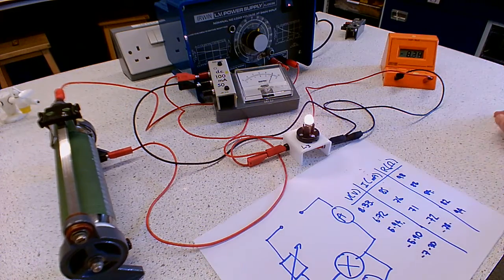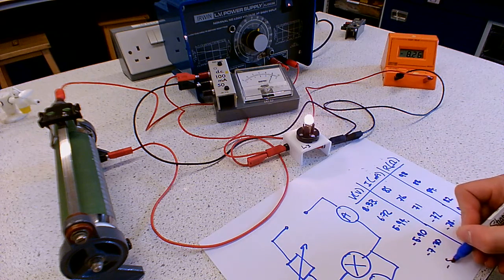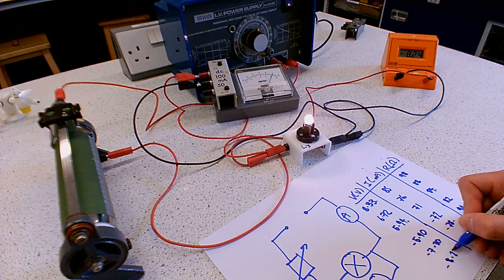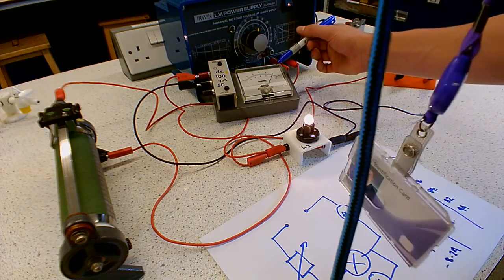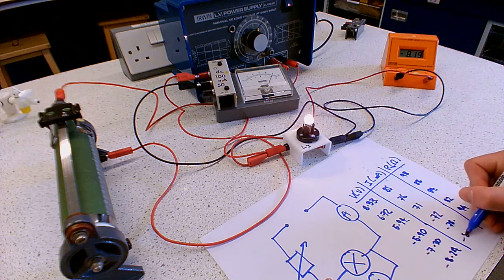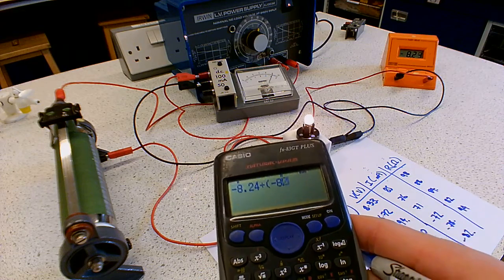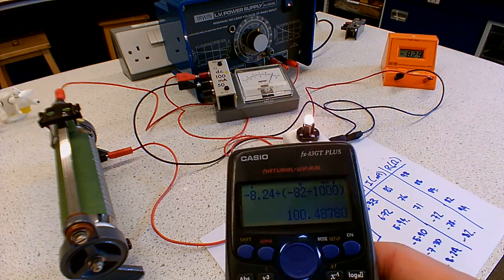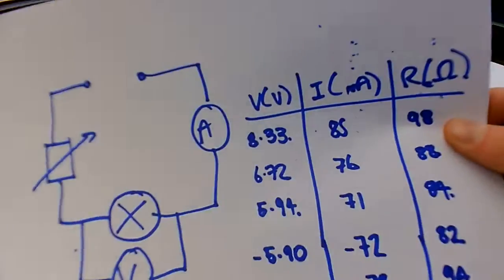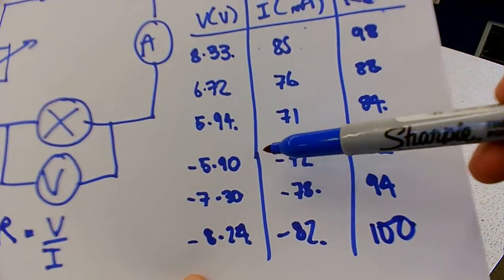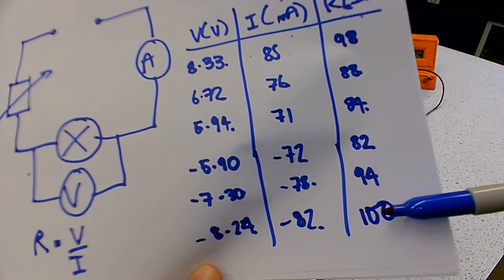Let's drop the resistance to its lowest setting. The potential difference has settled on minus 8.24, and the current is about 8.2 on the scale, so that's minus 82 milliamps. Doing the calculation: minus 8.24 divided by minus 82, divided by 1000 — that rounds to 100 ohms. So even when the potential difference is negative, as we make it a bigger number, the resistance seems to get bigger.